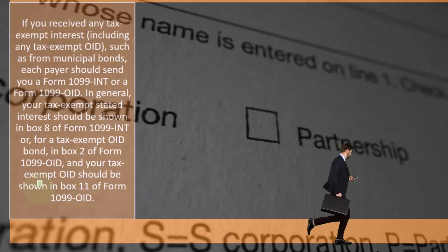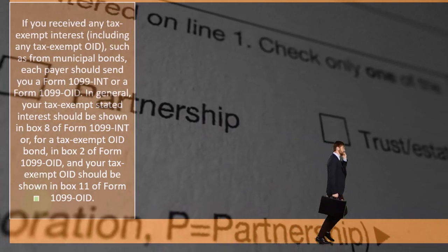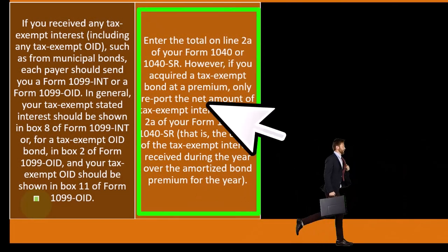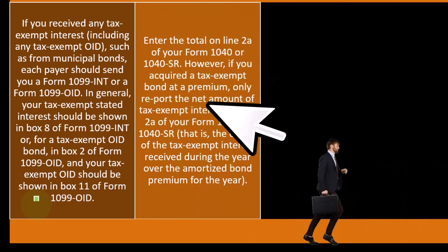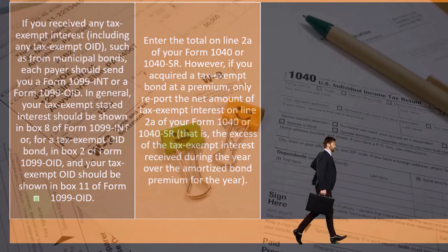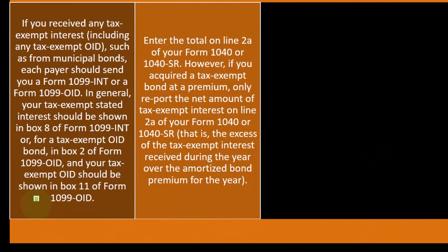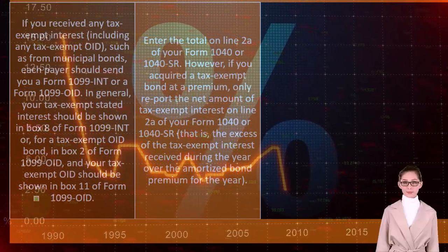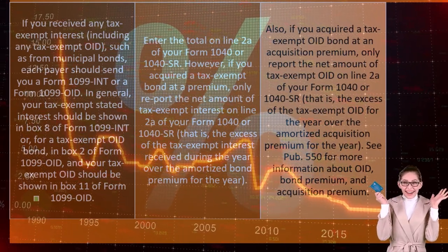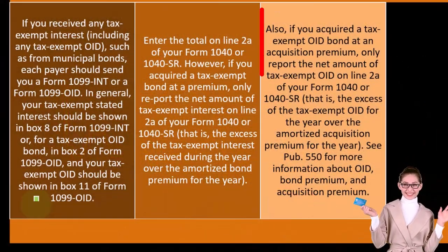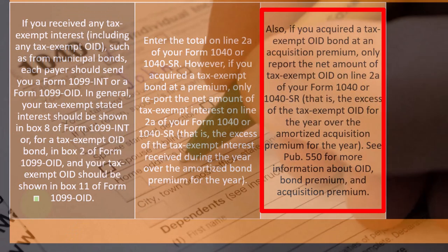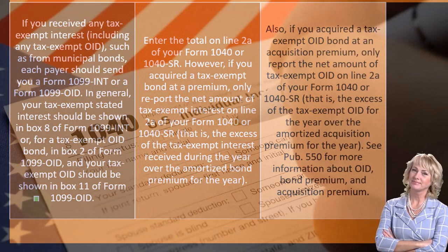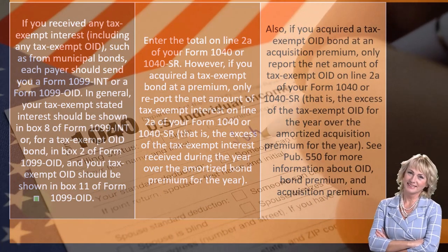For tax-exempt OID, it will be in box two of form 1099-OID, and your tax-exempt OID should be shown in box 11 of form 1099-OID. Enter the total on line 2a of your form 1040 or 1040-SR. However, if you acquire a tax-exempt bond at a premium, only report the net amount of tax-exempt interest on line 2a — that is, the excess of the tax-exempt interest received during the year over the amortized bond premium for the year. Similarly, if you acquire a tax-exempt OID bond at an acquisition premium, only report the net amount of tax-exempt OID on line 2a.